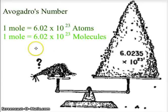And we are talking about Avogadro's number: one mole equals 6.02 times 10 to the 23rd atoms, or one mole equals 6.02 times 10 to the 23rd molecules. The mole is like a dozen where we always know it's the same value.